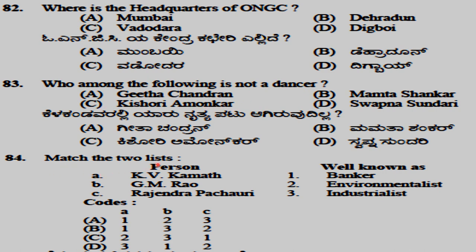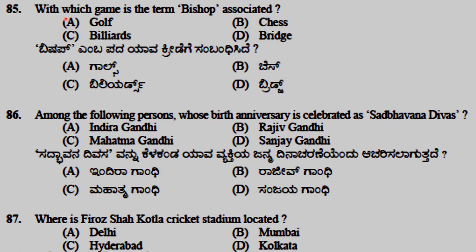In the match-the-list question: K. V. Kamath is a banker, G. M. Roy is an industrialist, and Rajendra Pachauri is an environmentalist. The term 'bishop' is associated with the game of chess.